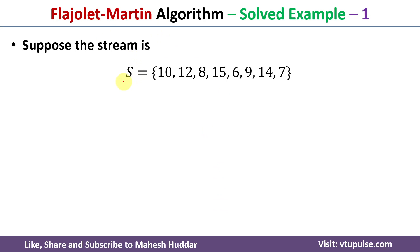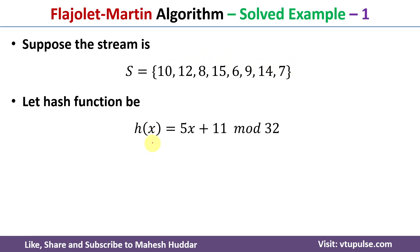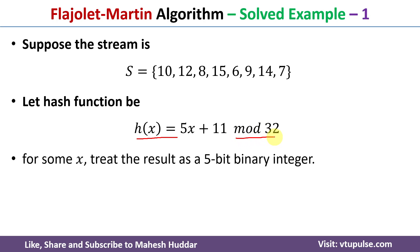We are taking the stream S, and this stream contains the following elements: 10, 12, 8, 15, 6, 9, 14, and 7. Here we will consider the hash function as h(x) = 5x + 11 mod 32. Because of mod 32, we will get a 5-bit binary integer.